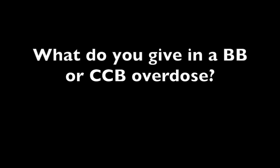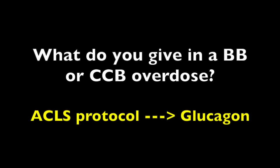What do you give in a beta blocker or calcium channel blocker overdose? These patients will have a very low heart rate, sometimes hypoglycemia, hypotension, respiratory depression, or pulmonary edema. You must treat that low heart rate — go through your ACLS protocol, give atropine. If refractory to atropine, consider transcutaneous pacing, or try glucagon, which has been shown to help in beta blocker and calcium channel blocker toxicity.